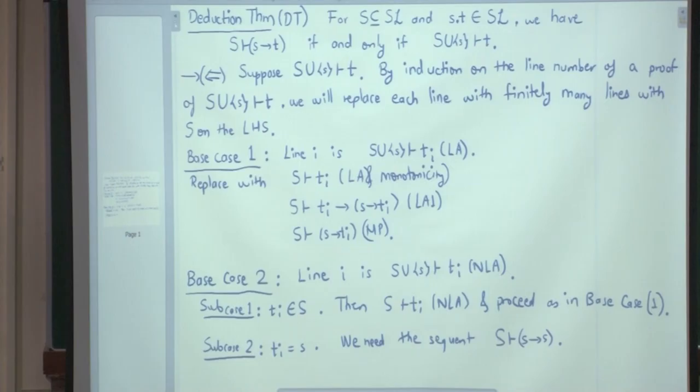So we use monotonicity. Why do we need to use monotonicity? Because when we proved that, we did not have any left hand side, left hand side was empty, right?